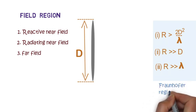This region is also called Fraunhofer region. Among the above three regions, the far field region is the most important region since it determines the antenna's radiation pattern.